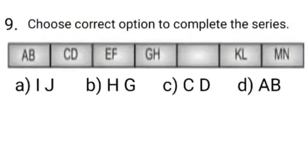Now let's solve our ninth question. Choose correct option to complete the series. Dear students, here we can see a series of English alphabets in which boxes are there, and in every box 2-2 letters of English alphabet are written. Like in first box AB is written, in second box CD is written, in third box EF is written.